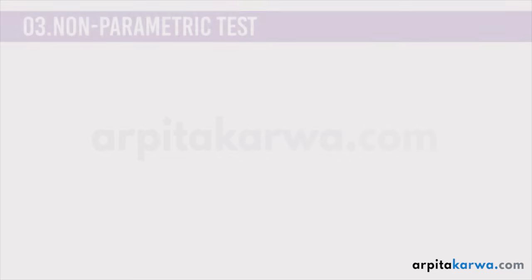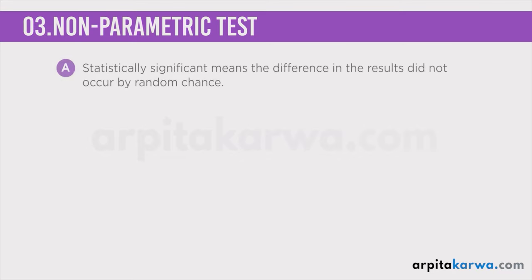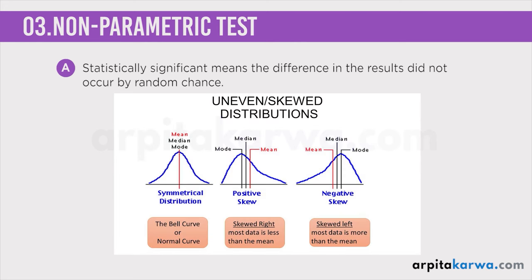Now let us look at what non-parametric tests are. Non-parametric tests are used in cases where parametric tests are not appropriate. Wherever we have a skewness or irregularity in the distribution of population and data, we have no other choice but to use non-parametric tests. If the population data is distributed normally and forming a symmetrical bell-shaped curve, we use parametric tests. But if the population data is skewed — going towards right or left — in that case we use non-parametric tests.